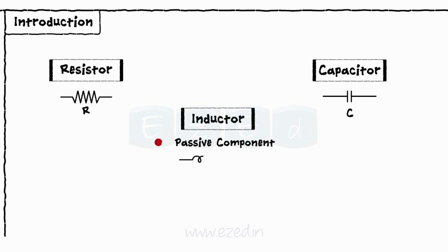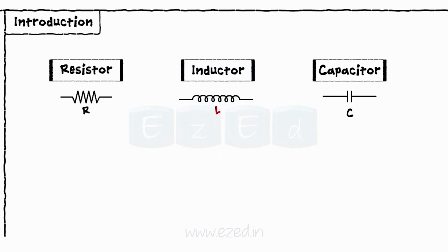When a metal wire is wound in a circular manner, we get an inductor. The symbol of an inductor is as shown. It is represented by a capital L, and its unit is Henry.